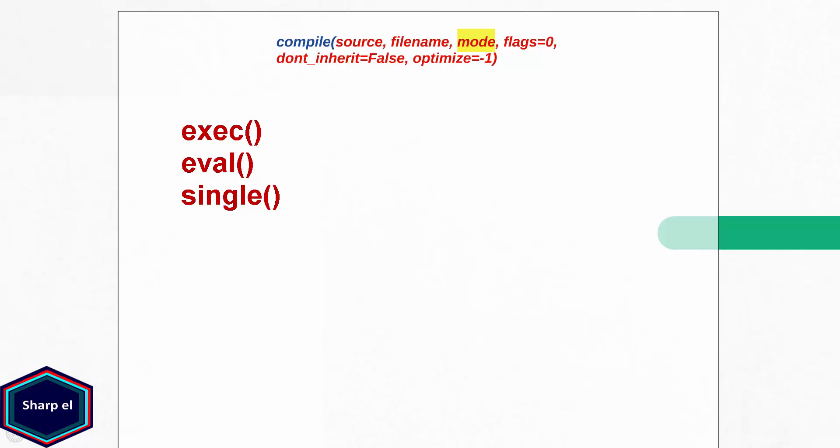If you are not reading the source from a file, you can leave the file name argument empty. The mode argument specifies what kind of code must be compiled. It can be exec if the source consists of a sequence of statements, eval if the source consists of a single expression, or single if the source consists of a single interactive statement. The optional arguments flags and do not inherit control which future statements affect the compilation of the source. If both arguments are empty, the code is compiled with whatever features are currently in effect. If flags is given but do not inherit is zero, the future statements specified by flags are used in addition to those already in effect. But if do not inherit is set, only those features specified in flags are enabled.